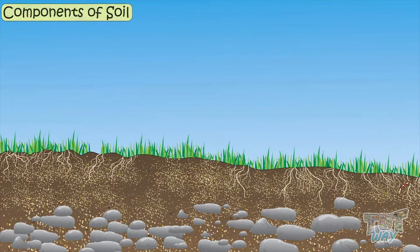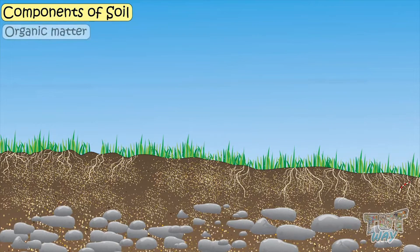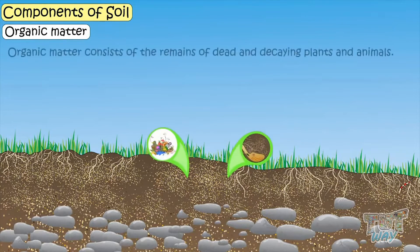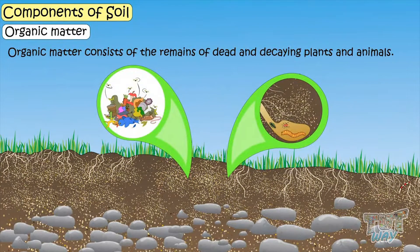Now let's learn the components of soil. First is the organic matter. It is dead and decaying plant and animal remains.